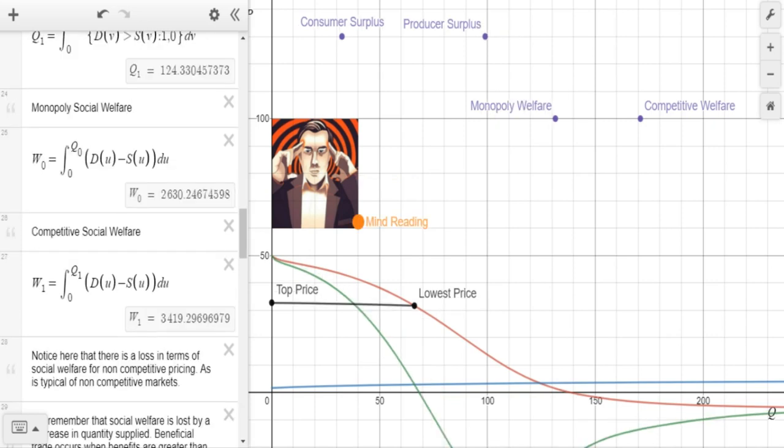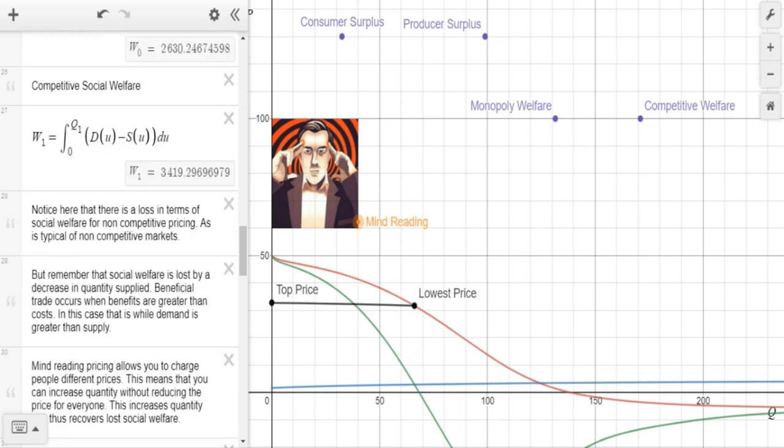Now, in all of these examples, we have social welfare. Non-competitive markets do have a loss in social welfare, as they're more focused on marginal revenue as opposed to demand. So there definitely is a loss. But we need to remember that social welfare is lost by a decrease in quantity supplied. Beneficial trade occurs when the benefits are greater than the cost. In this case, that is while demand is greater than supply.